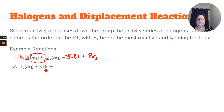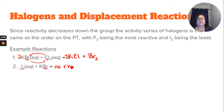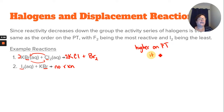Here we have potassium bromide and then iodine. Since bromine is higher on the periodic table, iodine cannot replace the bromine. Another way of thinking about it: the higher halogen on the periodic table has to be in the compound.